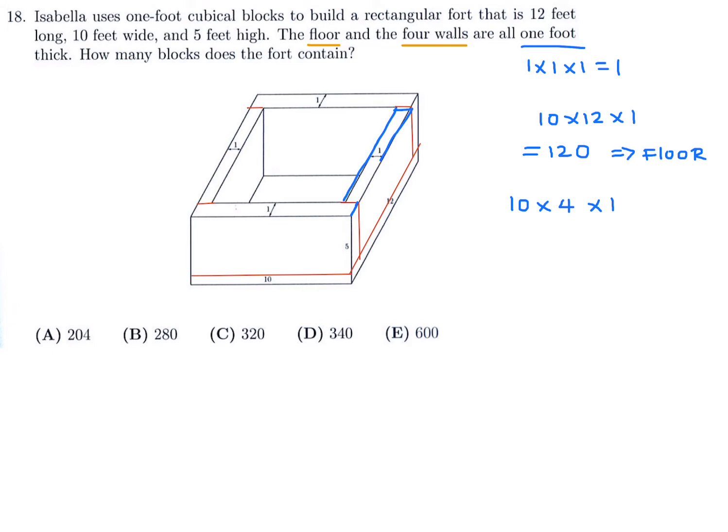So 10 by 4 by 1 is the dimensions of each of these slabs that make up the wall. And then this guy on the side is also going to be the exact same dimensions. Because if you notice, this whole thing was 12, but then we chopped off 1 on either end. So it becomes 10, and then the height is 4, and then the width is 1. So we have 4 identical slabs that all have that dimension. So we have to multiply this by 4 since there's 4 of them. So that's 4 times 10 times 4, which is 4 times 40. So that's 160. And these are the ones that make up the walls. So the total would be this plus this, which is 280. That's how many blocks you need to make the fort. So number 18, the answer is B.